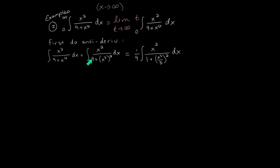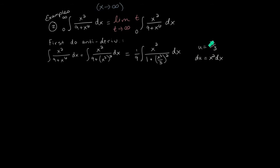How do we take the antiderivative of x squared divided by the quantity 9 plus x to the 6? What you need to notice is that x to the 6 is the same as x cubed squared — a power raised to another power, you multiply the powers. We can also factor out the 9, giving us 1 plus x cubed over 3, quantity all squared in the denominator. This is a u-substitution problem with u equals x cubed over 3, composed inside the denominator, and its derivative x squared dx appearing in the numerator. We get 1 ninth times the integral of 1 over 1 plus u squared du. That's arctangent.